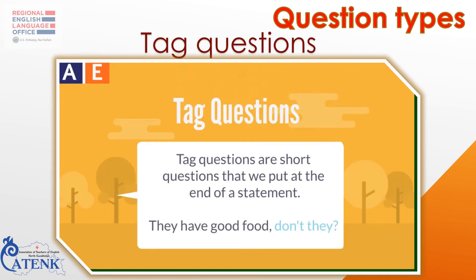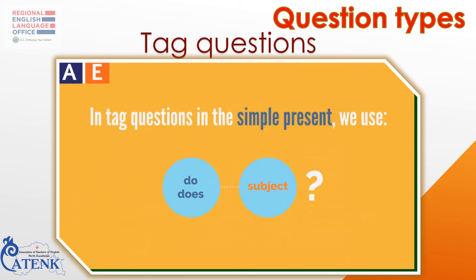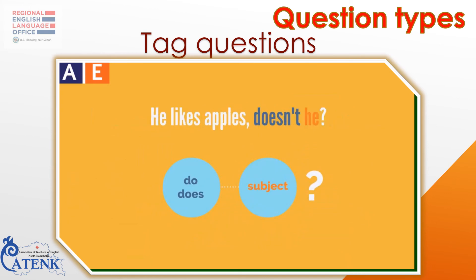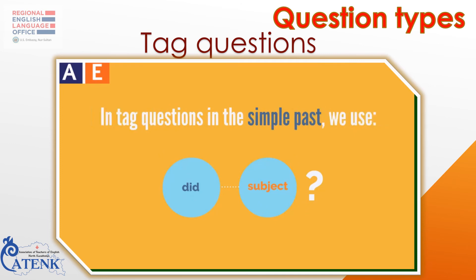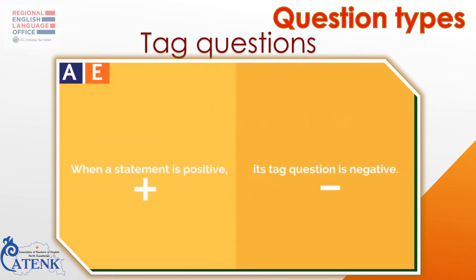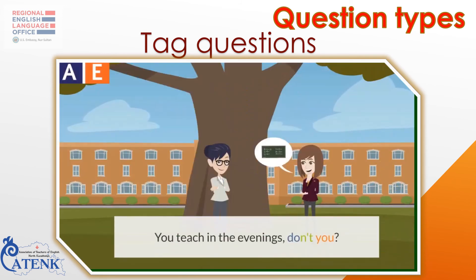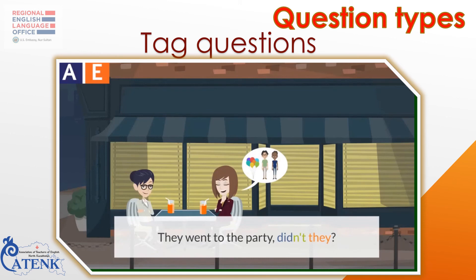Tag questions are short questions that we put at the end of a statement. We use tag questions when we want someone to confirm or agree with something that we think is true. In tag questions in the simple present, we use do or does plus the subject. For example: 'He likes apples, doesn't he?' In the simple past, we use did plus the subject: 'They went to the picnic, didn't they?' When a statement is positive, its tag question is negative: 'They live here, don't they?' More examples: 'You teach in the evenings, don't you?' — 'Yes, I do.' 'They went to the party, didn't they?' — 'Yes, they did.'